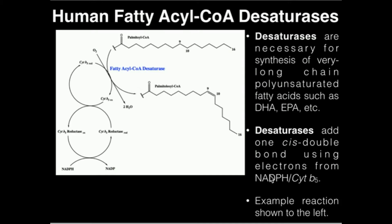The main thing I want to focus on in this video is how we can go from a simpler polyunsaturated fatty acid and make more complicated ones. First, we have enzymes called desaturases. A desaturase adds a double bond to a fatty acid. Here's one example: we have a saturated fatty acid, palmitoyl-CoA, derived from palmitic acid. Fatty acyl-CoA desaturase will put a double bond in between carbons 9 and 10, always in the cis conformation, generating this monounsaturated fatty acid derivative, palmitoyl-CoA.